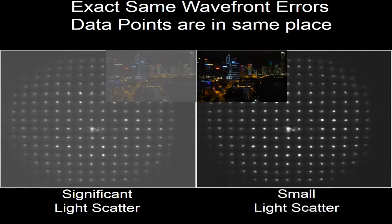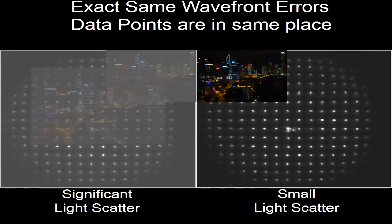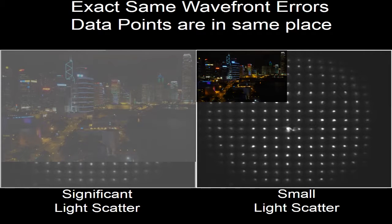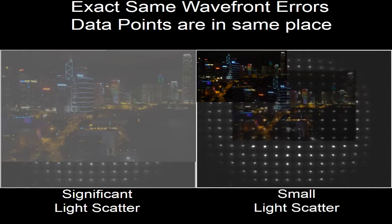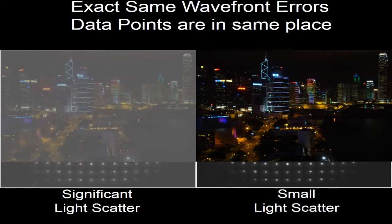Between those little dots, it should be black. If there's light scatter in the optical system from the cornea, the lens, or the vitreous, that light scatter reduces the contrast between the black background and the dots themselves. So you could actually end up with a grid exactly like the original — no wavefront distortion — but the background has a haze from light scatter. We call this signal-to-noise ratio, the contrast between the dots and the background, and it can be reduced independent of wavefront.